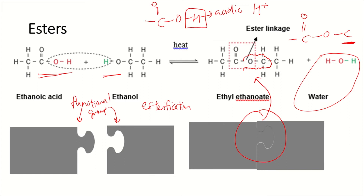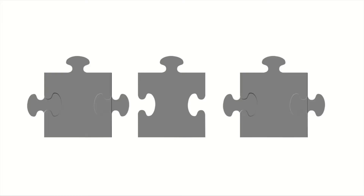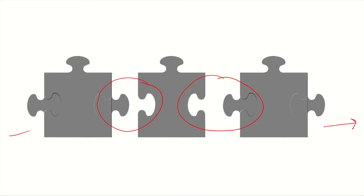What if a molecule has two openings — two functional groups — and another molecule also has two functional groups? They can join together on both ends and continue joining with more monomers in a chain. This is the basis of forming a polymer through continuous linkage.